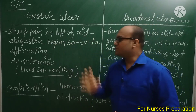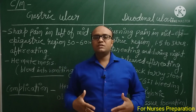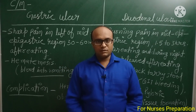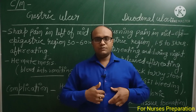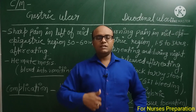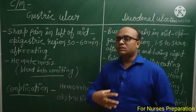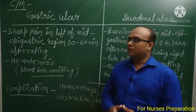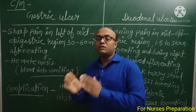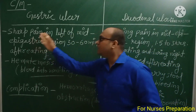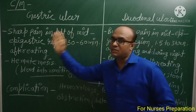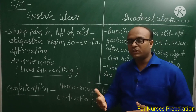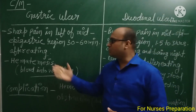Mid-epigastric region क्या होता है? आप अपने abdomen को imaginary lines — दो horizontal और दो vertical — के द्वारा 9 regions पर बाँट सकते हैं। Xiphoid process से कुछ नीचे का हिस्सा epigastric region कहलाता है। यदि person के epigastric region से हल्का सा left side में, खाना खाने के आधे से एक घंटे बाद pain होता है, तो gastric ulcer होने की संभावना है। Next important है hematemesis — vomit के साथ blood भी आना।